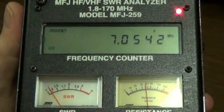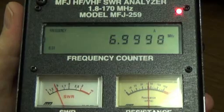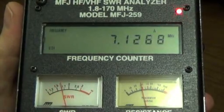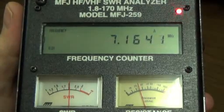If I go down to 7.0, I'm still a little below 1.5:1. On the high end, my 2:1 point is at 7.164.